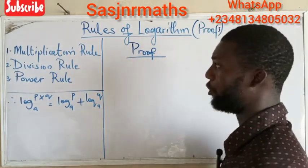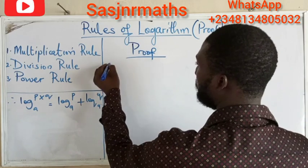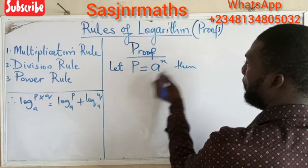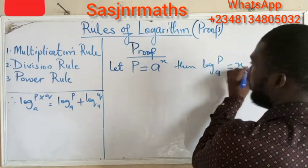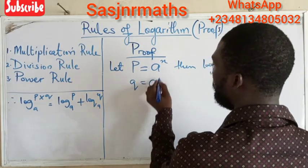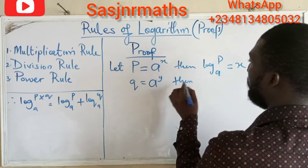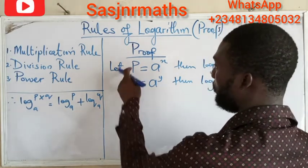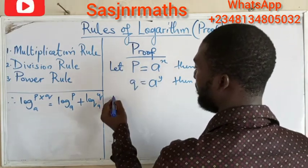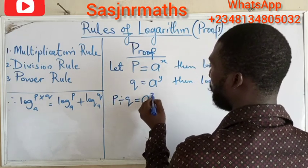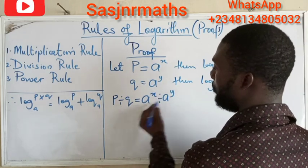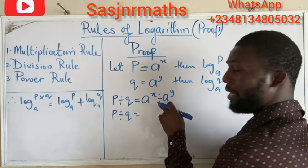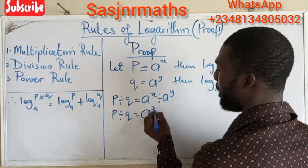For the division rule, the same approach applies. Let p equals a raised to power x, then log base a of p equals x. Also let q equals a raised to power y, then log base a of q equals y. Now dividing p by q: p divided by q equals a raised to power x divided by a raised to power y. Using the law of indices — same base, different powers, division — we subtract the powers: p divided by q equals a raised to power x minus y.